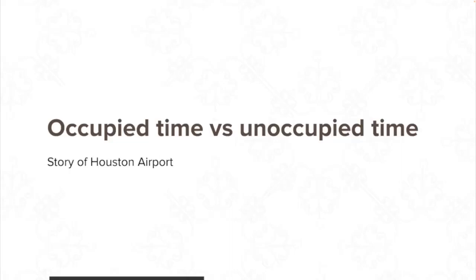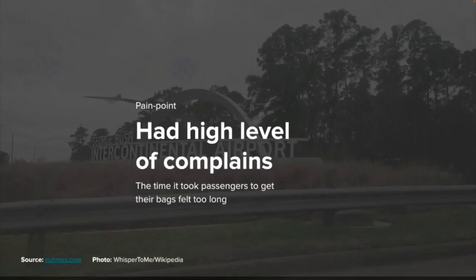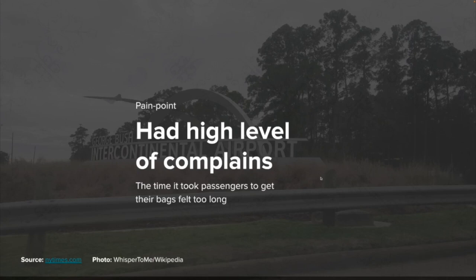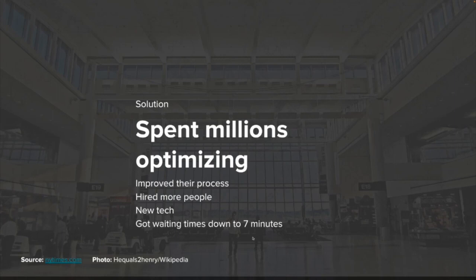The second story is about occupied time versus unoccupied time — it's the story of Houston Airport. Houston Airport in Texas had a high level of complaints. Passengers would complain about how long it would take for their suitcases to get from the airplane to the terminal building. Houston Airport spent millions optimizing this process — they hired more people, employed more tech — and got the time down to seven minutes, which was very fast.